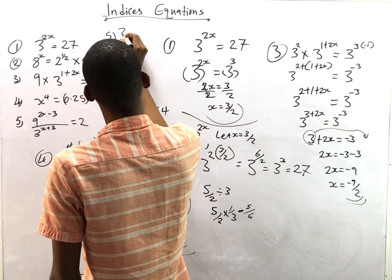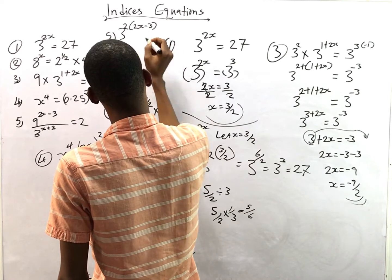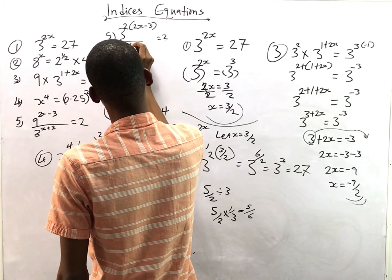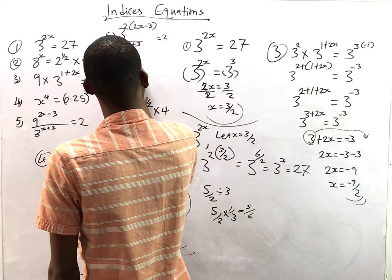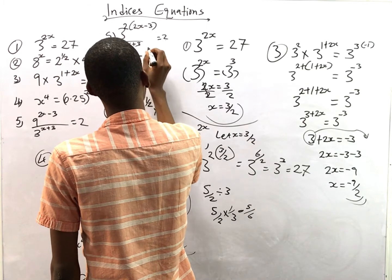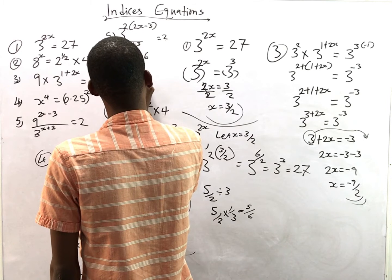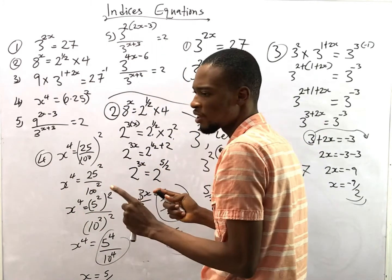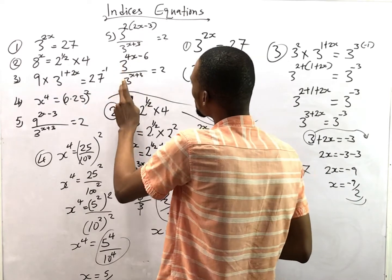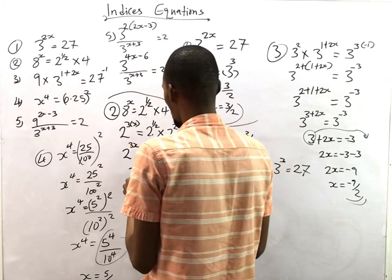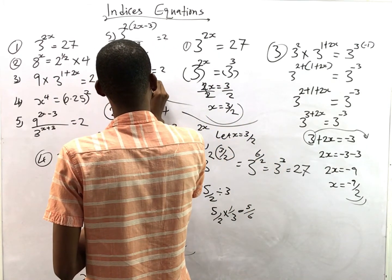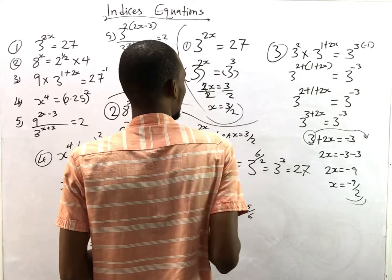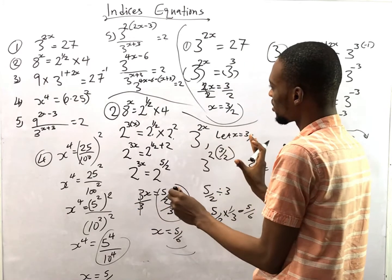Question five: 9^(2s-3) / 3^(s+3) = 2. First, 9 = 3^2, so 9^(2s-3) = 3^(2(2s-3)) = 3^(4s-6). Now we have 3^(4s-6) / 3^(s+3). From the law of division of indices, when bases are the same you subtract the powers, giving 3^(4s-6-(s+3)) = 2.